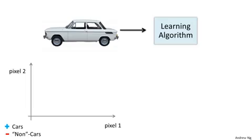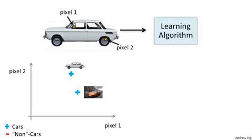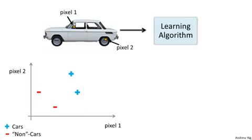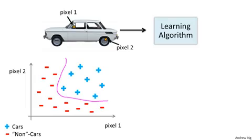To understand why we need nonlinear hypotheses, let's look at some images of cars and non-cars. Let's pick a couple of pixel locations in our images — pixel one location and pixel two location — and plot each car at a point depending on the intensities of pixel one and pixel two. If we do this for more and more examples, using pluses to denote cars and minuses to denote non-cars, what we'll find is that the cars and non-cars end up lying in different regions of this space. Therefore, we need some sort of nonlinear hypothesis to try to separate out the two classes.